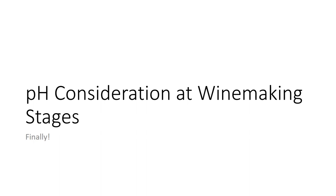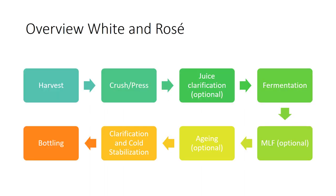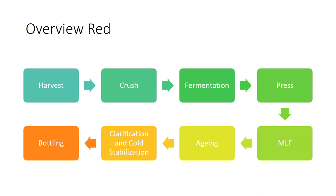Moving on to a chronological look at pH considerations in the winemaking stages. For whites and rosés: harvest, crushing and pressing, potential juice clarification, primary fermentation, optional malolactic fermentation, optional aging, clarification and cold stabilization, then bottling. For reds it's similar — harvest, crush, then fermentation before pressing. Almost all red wines undergo malolactic fermentation, so that moves from optional to standard. Then aging, clarification and cold stabilization, and bottling.